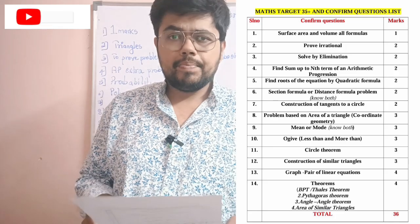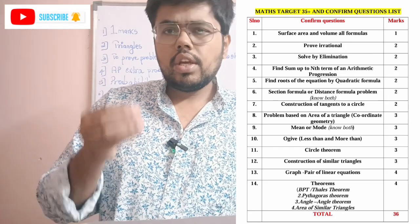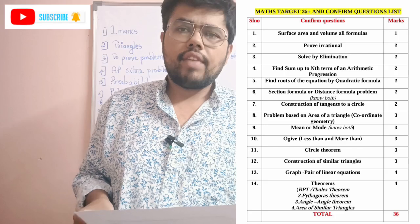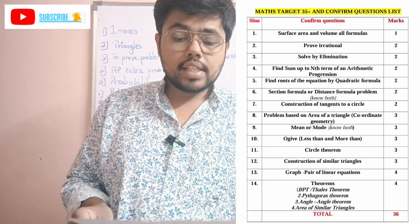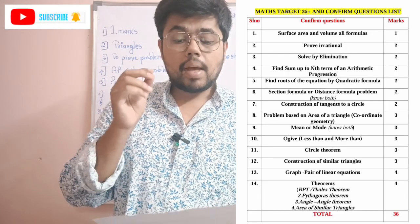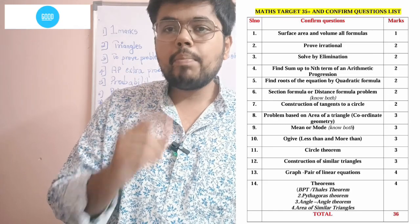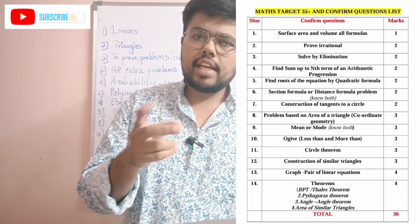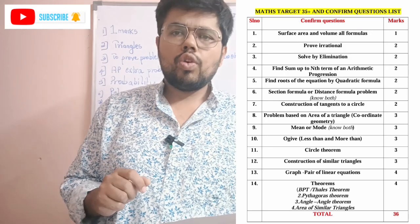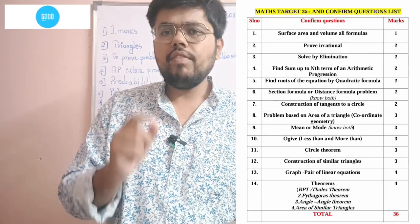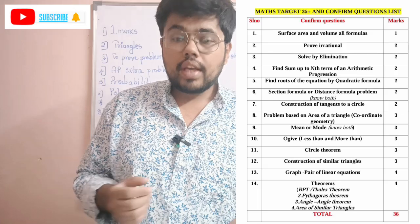Next, elimination problems — they will give two linear equations and you have to find the value of x and y through elimination. That is a definite question. Next, sum up to nth term (Sn), not just the nth term. Both the nth term (an) and sum to nth term (Sn) are simple problems, and you will definitely get two marks. I feel the Sn problem will be in two marks.